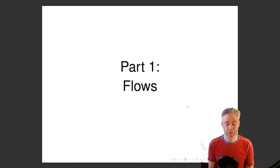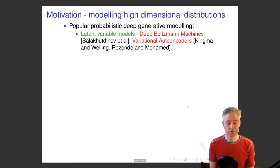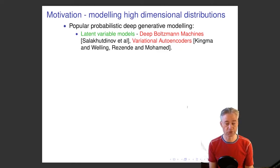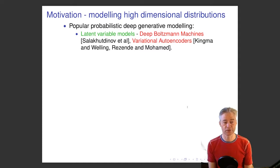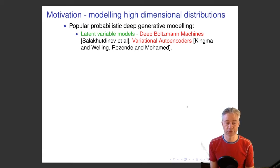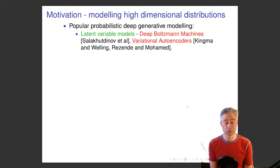Part one is about flows, which is a kind of semi-new method that has attracted a lot of attention in generative modeling because it allows you to compute exact log-likelihoods. To motivate this: when we do unsupervised learning with deep models, we want to model high-dimensional probability distributions, often from big datasets — for example, a big database of images.